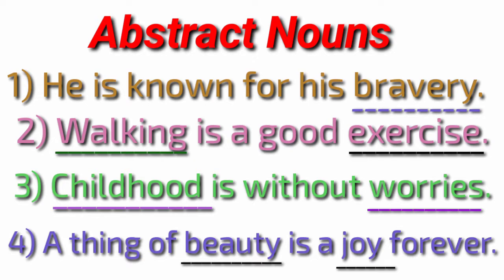Let us see some examples of abstract nouns. Abstract nouns stand for ideas, qualities, actions or states. Then what are the qualities? Quality means in Marathi we say Gunavishesh. Let us see some abstract nouns indicating quality.